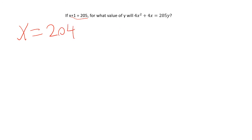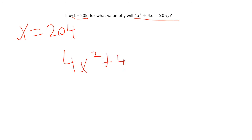Now we know what x is, but computing 4x squared plus 4x directly is going to be too long — we want a fast way to handle the problem. Let's take a look and try to factor a little bit. I have 4x squared plus 4x. I can factor a 4x out of the equation, leaving 4x times x plus 1.